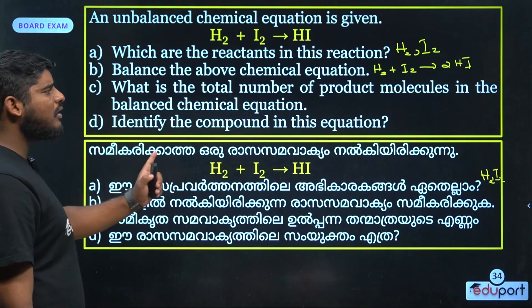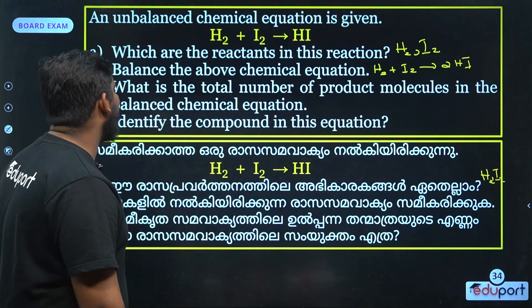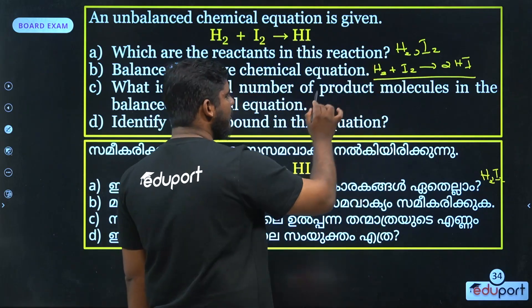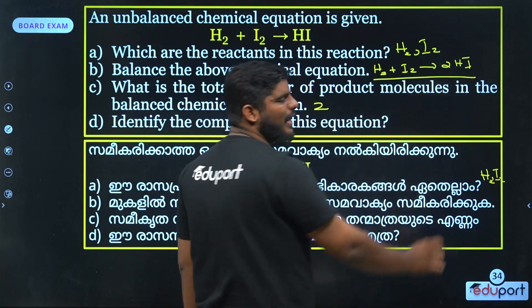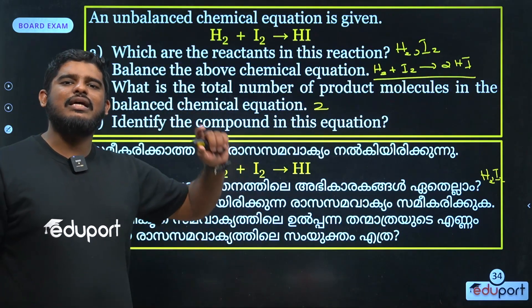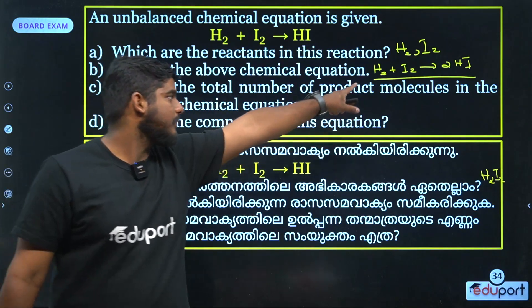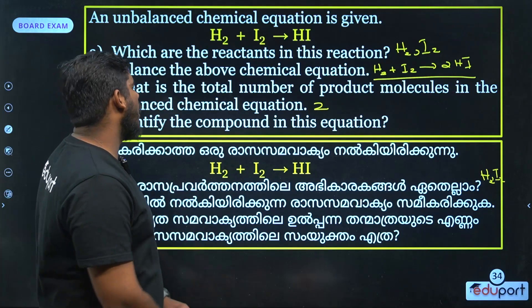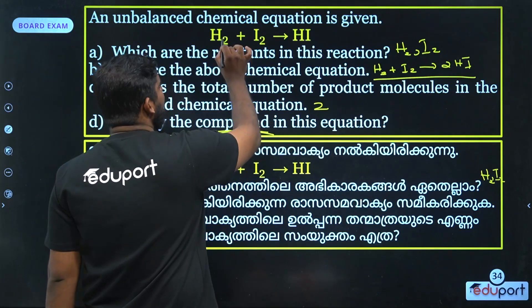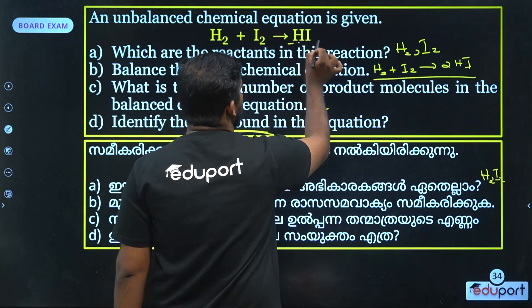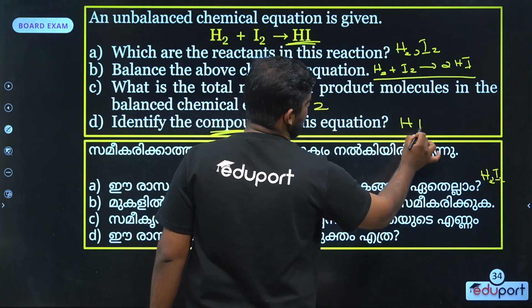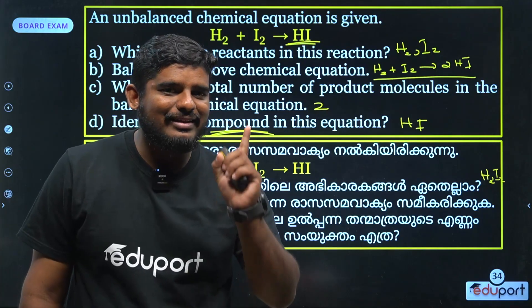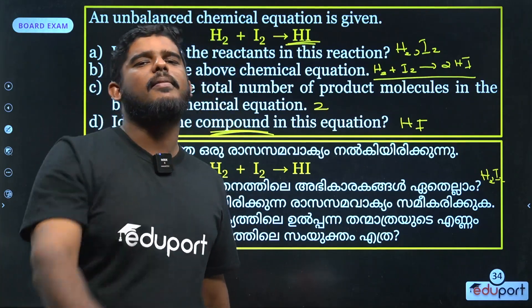Then, what is the total number of product molecules in the balanced chemical equation? So in this equation, the total number is 2. The total is 2. Then, identify the compound in this component. This is the compound — HI. You can use the product. You can use the simple question.